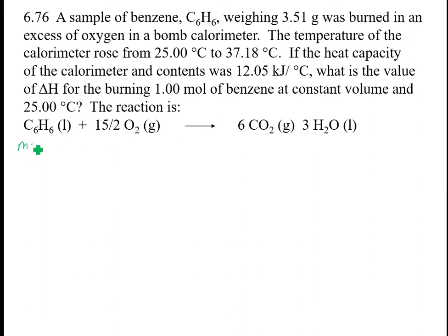I have mass, and that is 3.51 grams of C6H6. I have a temperature of 25 degrees C and a temperature of 37.18. This is also C, and again, because there's no units of mass or moles here—kilojoules per degree C—so this is C: 12.05 kilojoules per degree C. And it wants to know what is delta H. So step one is to find the Q.